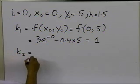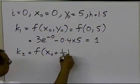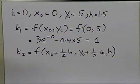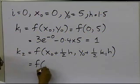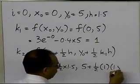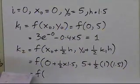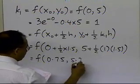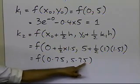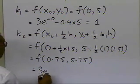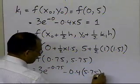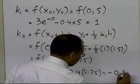k2 is the function f evaluated at the midpoint: x0 plus one-half h equals 0.75, and y0 plus one-half k1 h equals 5 plus 0.5 times 1 times 1.5, which is 5.75. So k2 equals 3e to the power minus 0.75, minus 0.4 times 5.75, which turns out to be minus 0.8829.